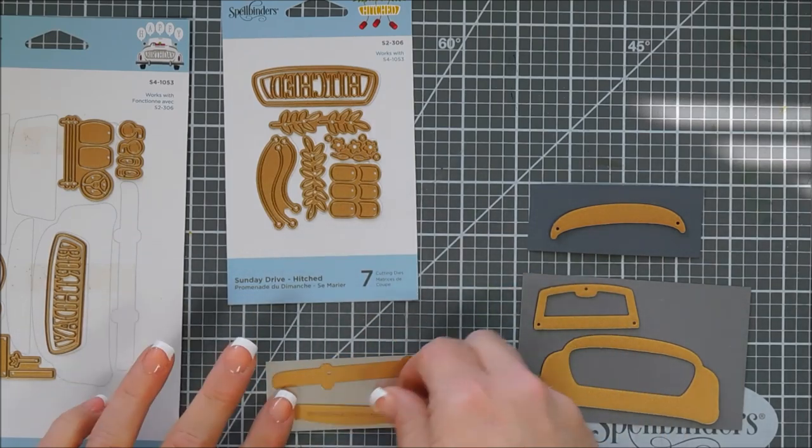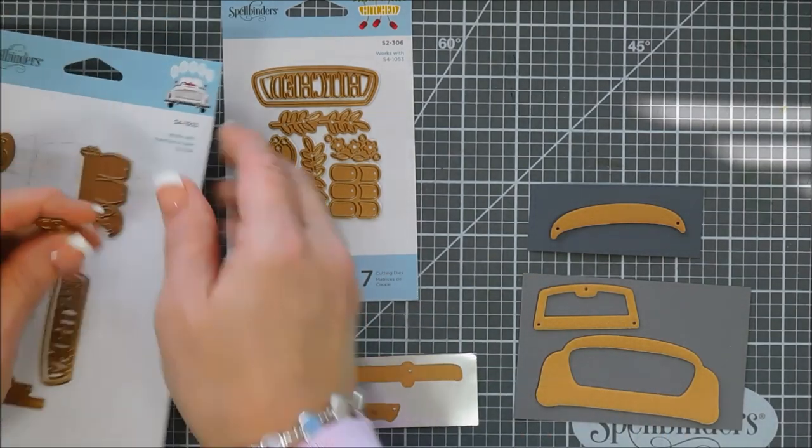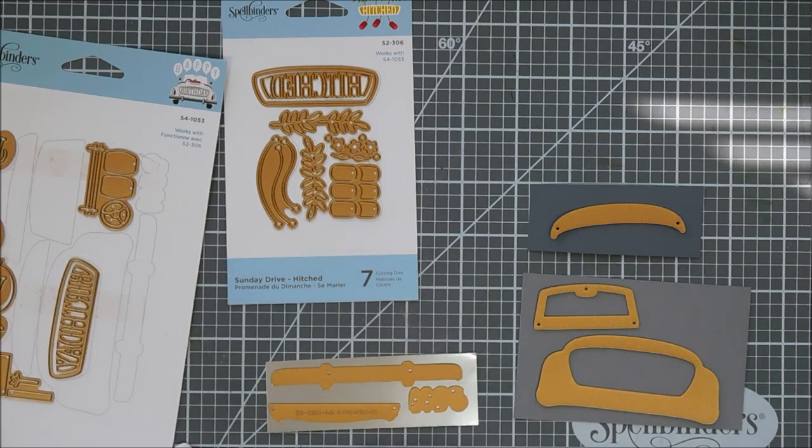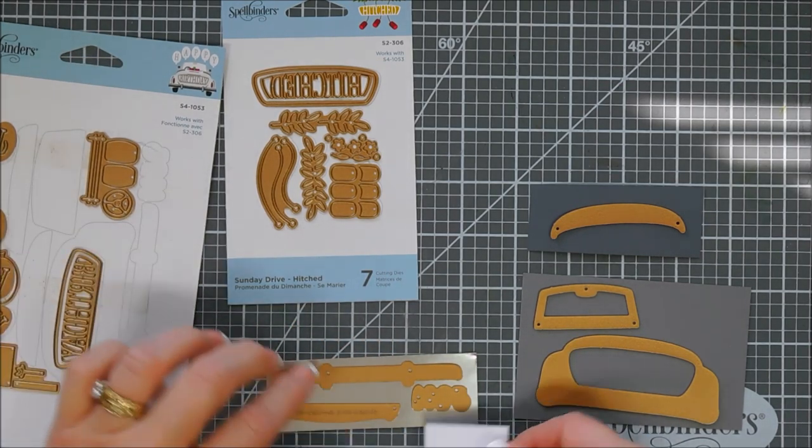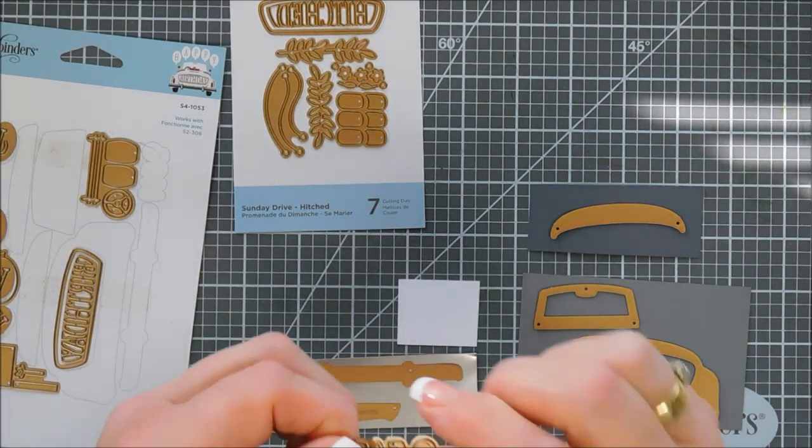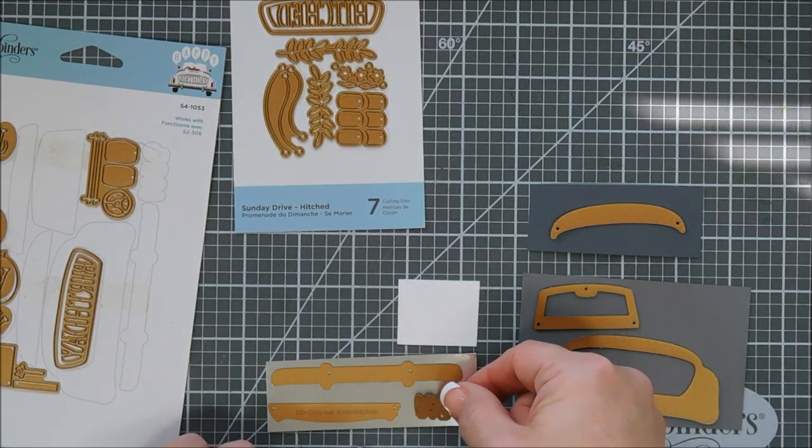We're also going to bring in some silver cardstock. I always keep my leftover silver cardstock from my card kits because it die cuts beautifully and it embosses beautifully, so that's what we're using today. We're going to do the mirrors and the bumper.